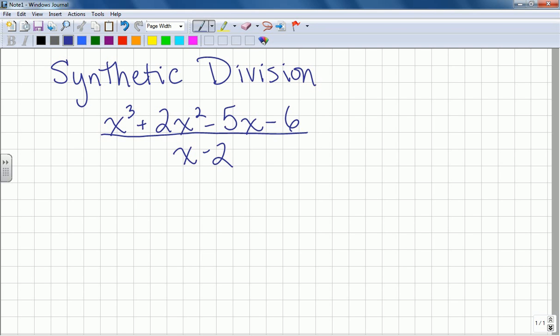I'm going to start off by identifying the coefficients in my numerator here of my problem. So my first number, I don't see a number out in front of here as a coefficient, but I know it's a number 1, so I'm going to write a 1 just to help guide me. So I have 1, 2, negative 5, and negative 6.